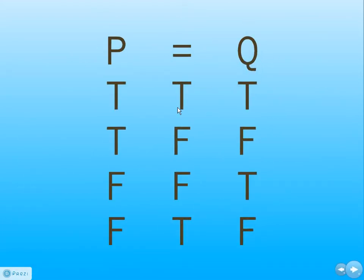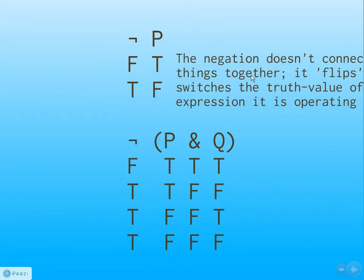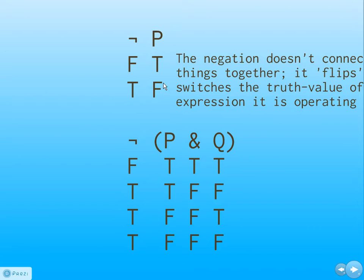Here's the IF-AND-ONLY-IF truth table. We won't spend much time on this — it's a technical notion that serves a useful purpose in a logical system, but doesn't really capture anything we say in English very often. The negation doesn't connect two things; it flips the value of one thing. If P is true, then NOT P is false. If P is false, then NOT P is true. For example, if P stands for 'I have a million dollars in my pockets,' since I don't, NOT P is going to be true.